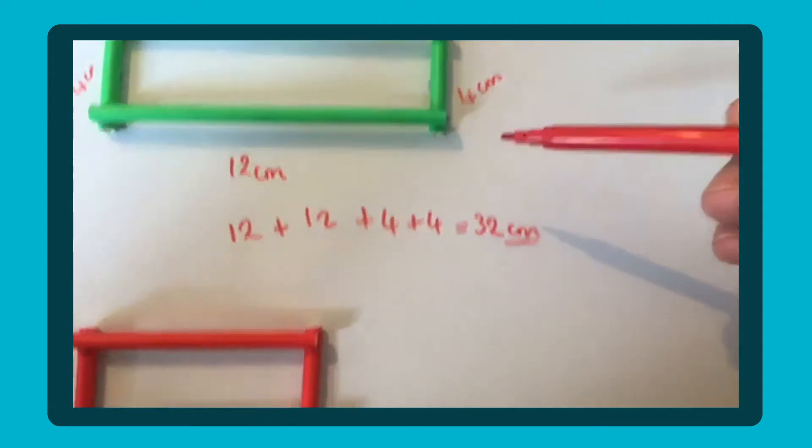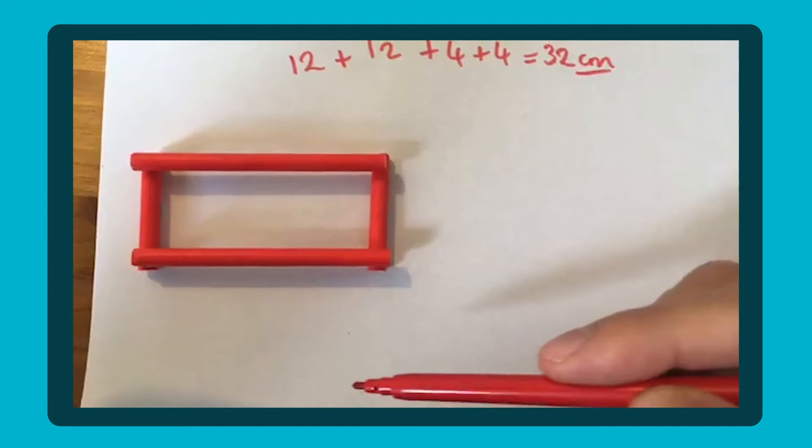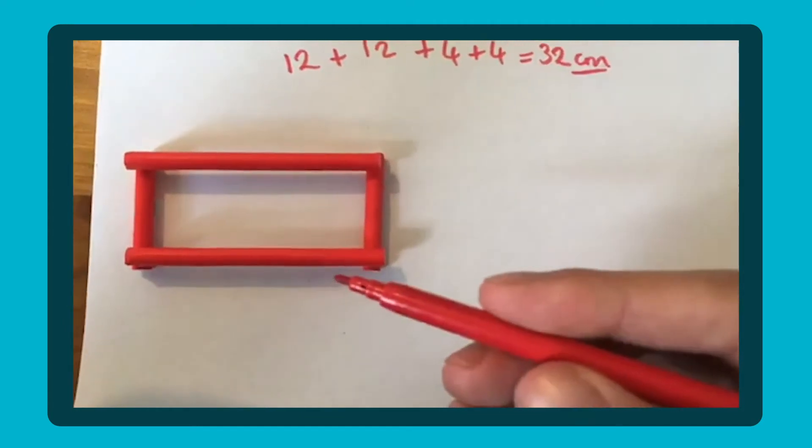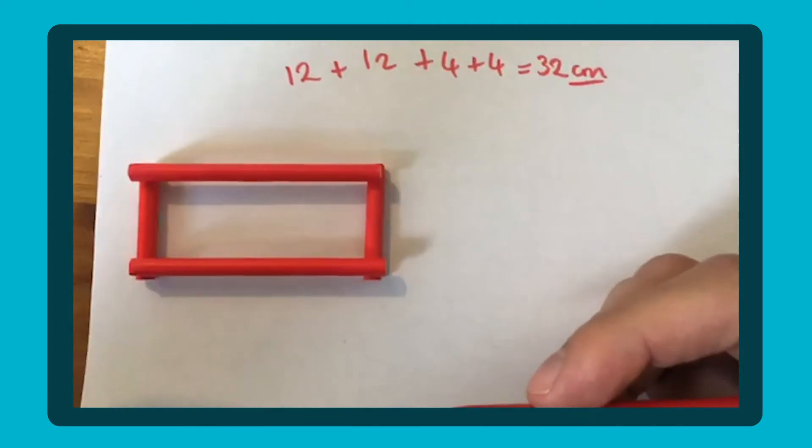And you may mix that up. You might do smaller ones, larger ones, again adding up those sides to get the total perimeter.